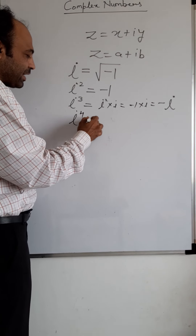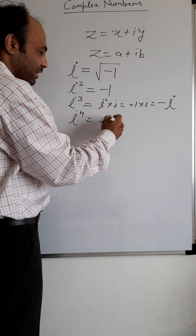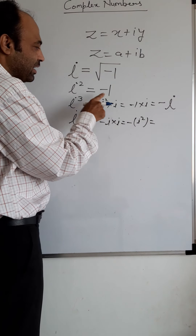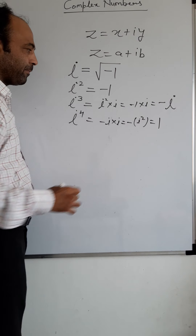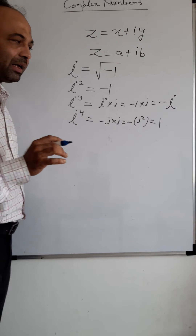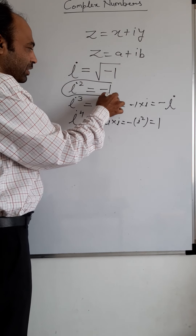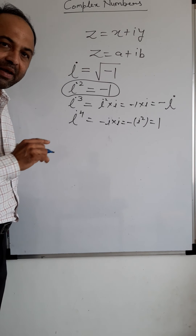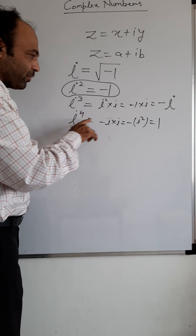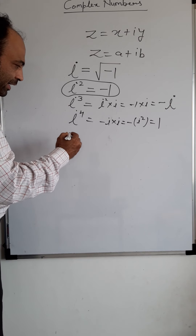What will i⁴ be? i⁴ is i³ into i, which is minus i into i — that gives minus i², and since i² is minus 1, it becomes minus times minus, which is plus 1. So the values are: i = √(−1), i² = −1 (this is a very important part), i³ = −i, and i⁴ = 1.